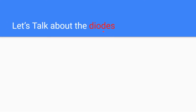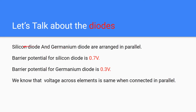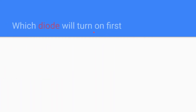There are two diodes and they are not the same — one is germanium, another is silicon. The silicon diode and germanium diode are arranged in parallel. The barrier potential for silicon is 0.7 volt, meaning it does not turn on until it gets 0.7V across it. For germanium it is 0.3 volt. When connected in parallel, the voltage across both elements remains the same.